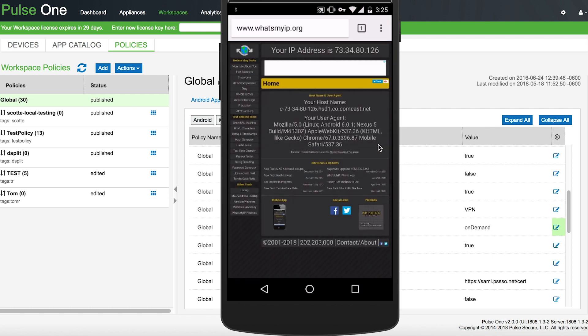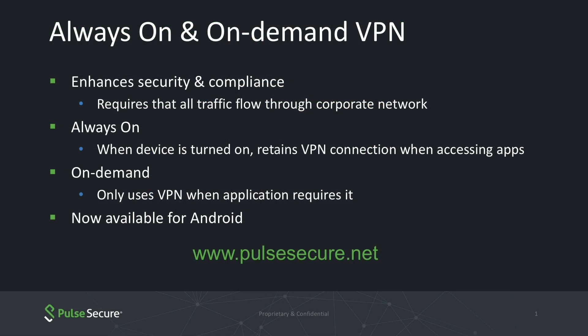Thank you, and that concludes On-Demand and Always On VPN for Android. As Scott showed, Always On and On-Demand enhances security and compliance by requiring all traffic to flow through the corporate network. If the device is turned on, the VPN connection is retained when accessing applications, or only if the application itself requires it. This feature is now supported for Android in our most recent release, adding to existing iOS support so that mobile workforces can take advantage of enhanced security. Check out more details at www.pulsesecure.net.